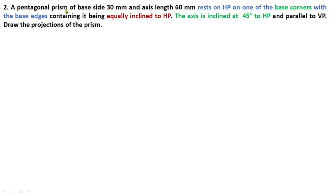Read the question: A pentagonal prism of base size 30 mm and axis length 60 mm rests on HP with one of the base corners, the base edges containing it being equally inclined to HP. The axis is inclined at 45 degrees to HP and parallel to VP. Draw the projections of the prism.